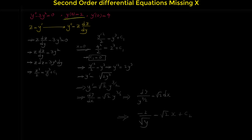So we have negative 2 over square root of y equals square root of 2 times x plus c2. Based on the initial condition, when x is 0, y is 2. Plugging in: negative 2 over square root of 2 equals 0 plus c2. Since negative 2 over square root of 2 equals negative square root of 2, we get c2 equals negative square root of 2.